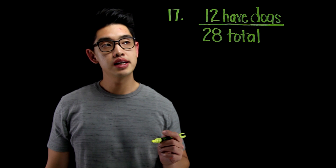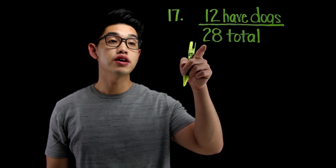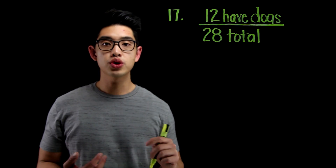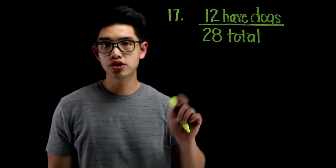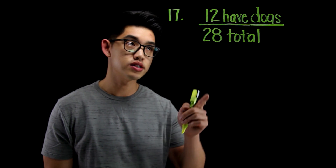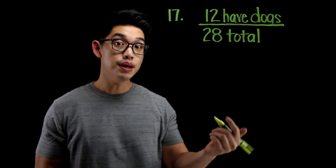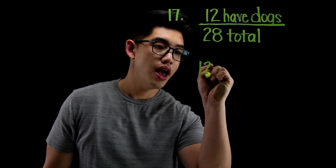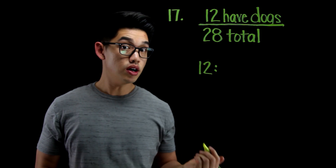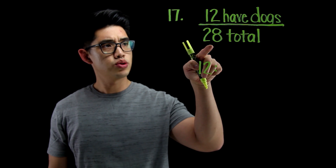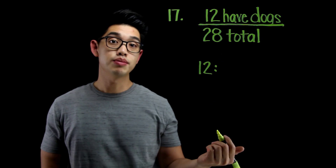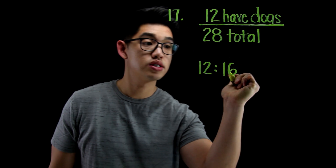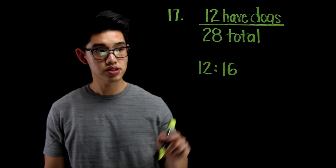For number 17, it says that 12 out of 28 students have dogs. And we want to find the ratio of people who have dogs to people who don't have dogs. So I know that there are 12 people who have dogs. The number of people who don't have dogs — you can figure that out just by doing 28 minus 12, and that's going to be 16. So it's 12 people who do have dogs to 16 people who don't have dogs.